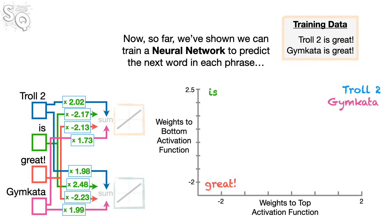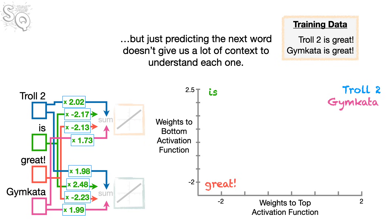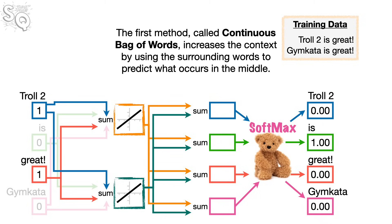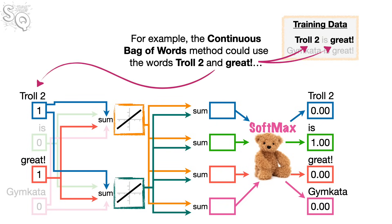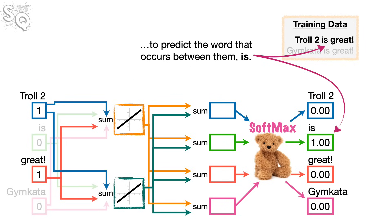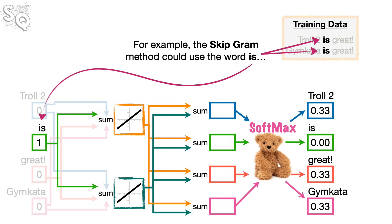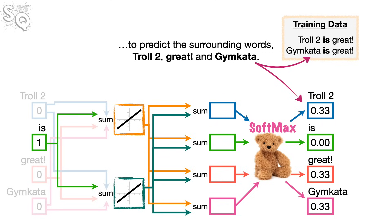So far we've shown we can train a neural network to predict the next word. Now let's learn about the two strategies that Word2Vec uses to include more context. The first method, called continuous bag of words, increases context by using the surrounding words to predict what occurs in the middle — for example, using 'Troll2' and 'great' to predict 'is'. The second method, called skipgram, uses the word in the middle to predict the surrounding words — for example, using 'is' to predict 'Troll2', 'great', and 'Jimkata'.